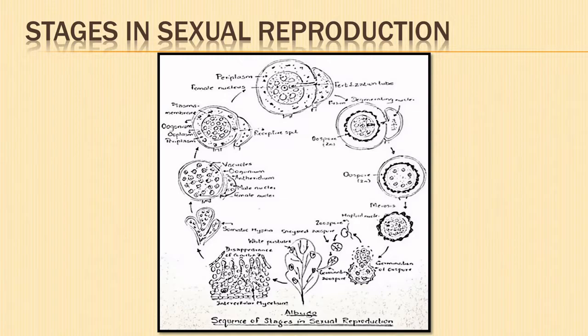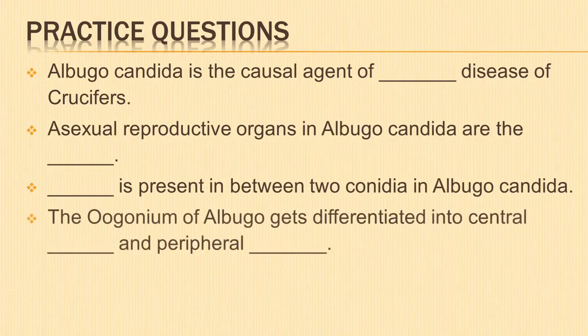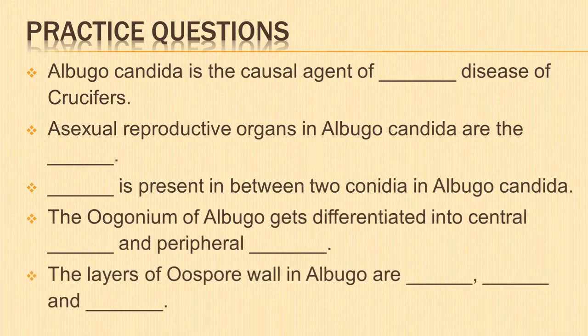So today we have learnt in detail about the vegetative structure of fungus Albugo candida and its various modes of reproduction. I have some practice questions for you — please share your answers in the comment section below. You can pause the video and write down the questions if you like.